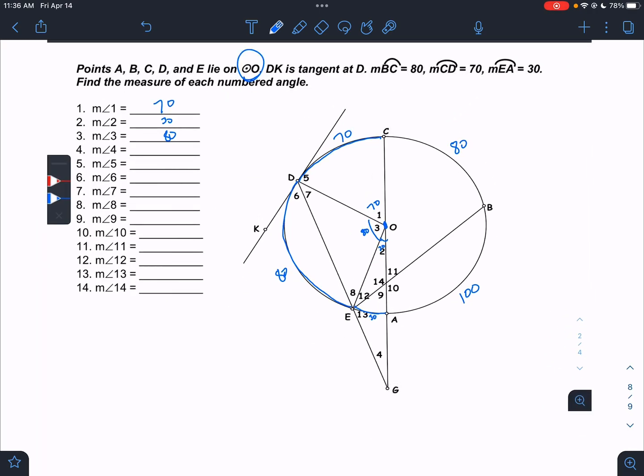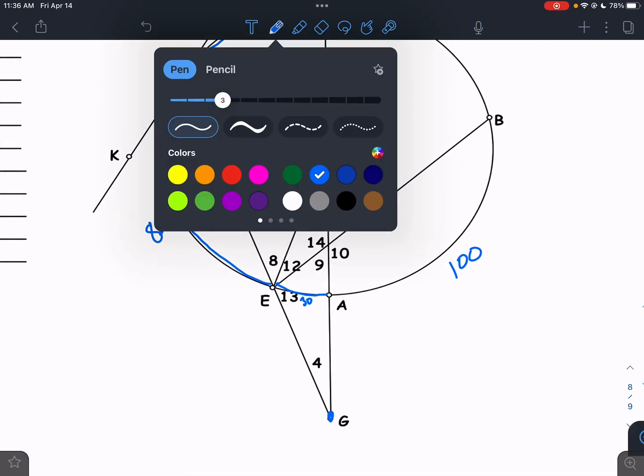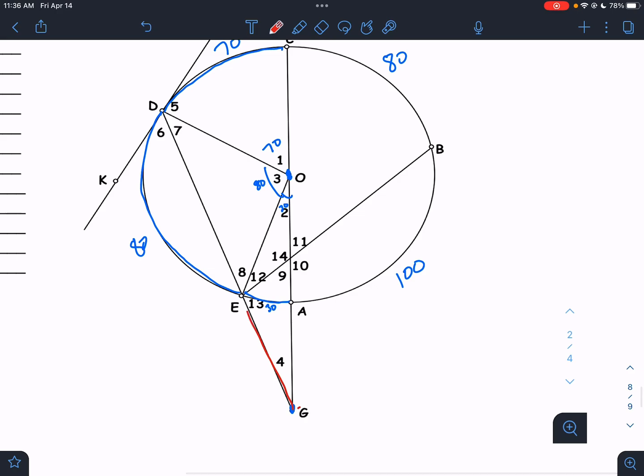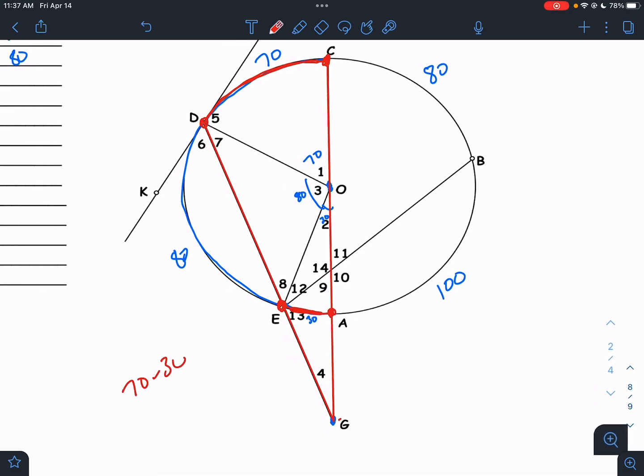Then we have angle 4. Angle 4, you're way out here, my man. That is an exterior angle. Let's change colors a little bit. Exterior angles. Follow the sides. Find the booms. Where are the booms? We got boom, boom. We got boom, boom. That's where angle 4 hits the circle. Its arcs are going to be in between the booms. So its arcs are 70 and 30, and the rule for exterior angle is you subtract and divide by 2. So that would be 40 divided by 2. Angle 4 is clocking in at 20 degrees.